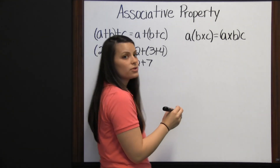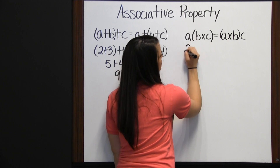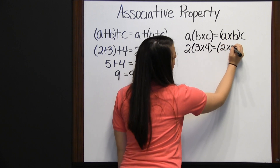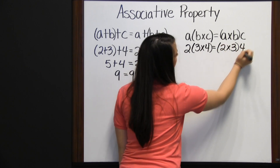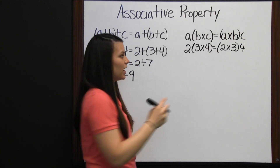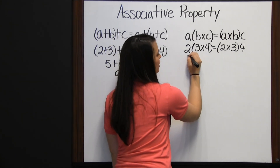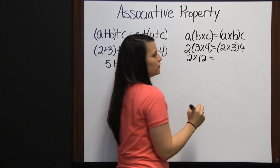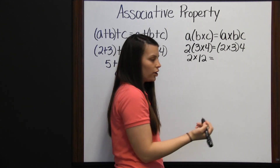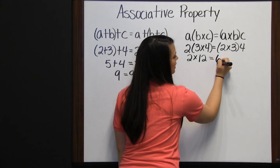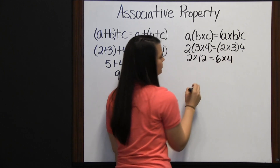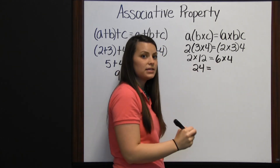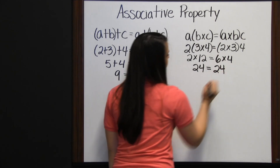Let's see what happens when we do the multiplication side. I'm going to use 2 times 3 times 4 is equal to 2 times 3 times 4. According to PEMDAS, we have to start inside our parentheses. So 2 times 3 is 6, times 4 is 12, equal to 2 times 12, which is 24. That does equal 6 times 4, which is also 24.